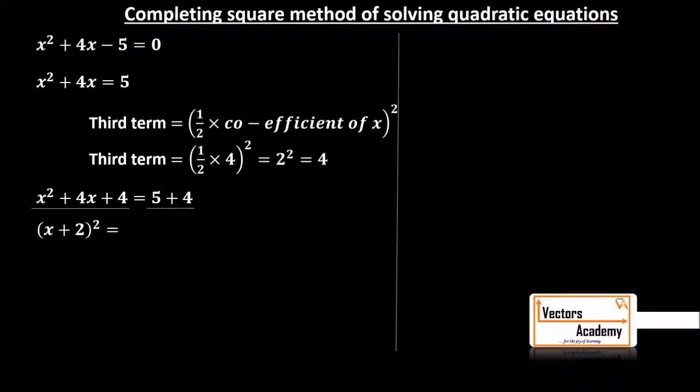Whereas the right hand side is 5 + 4 which is 9. Now we know that 9 is the square of a number, that is 3, so 9 can be written as 3².